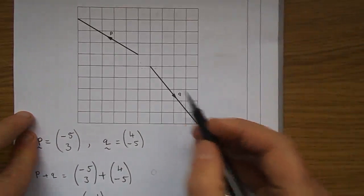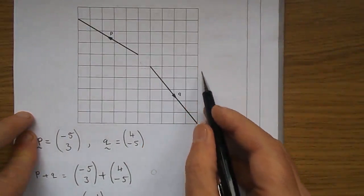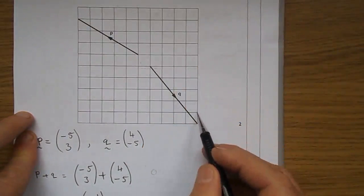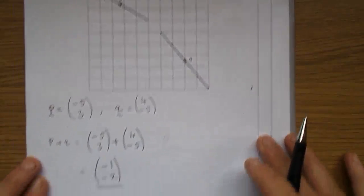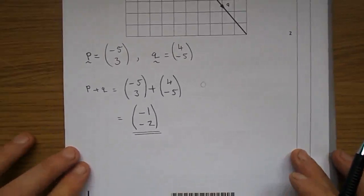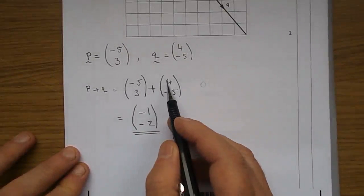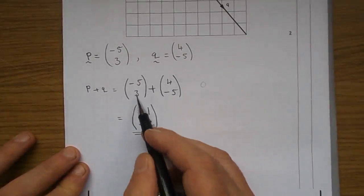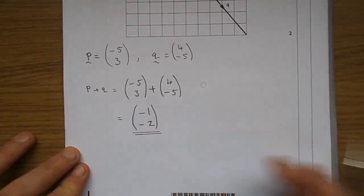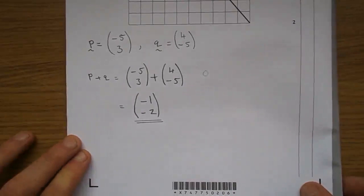What does vector q do? It takes you 1, 2, 3, 4 along, and 1, 2, 3, 4, 5 down. 4 along, 5 down, is 4 minus 5. You have to add them, so there's me just written them in column form. Minus 5 add 4 is minus 1. 3 add minus 5, minus 2. So, minus 1, minus 2 is your final answer there.